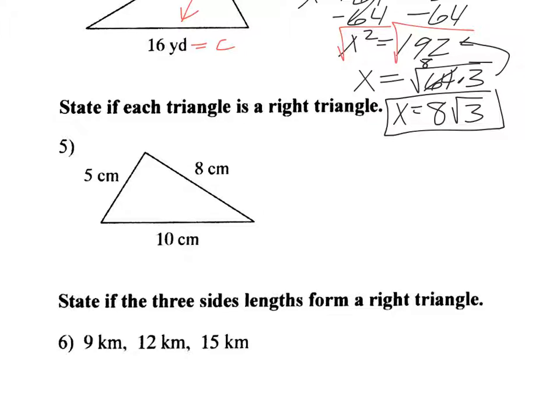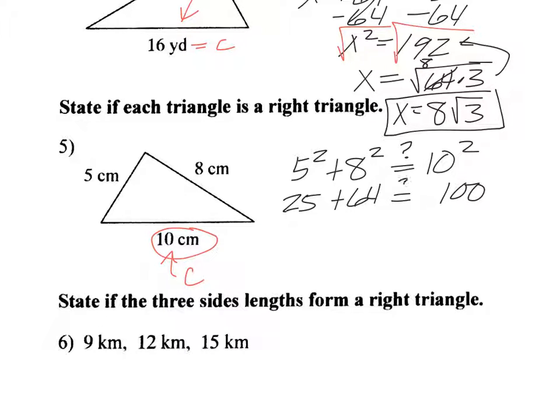Okay, this one says state if each triangle is a right triangle. So here, 10 would have to be the C if it works. Now, what we have to do is check. So the way we do that, we do Pythagorean Theorem, and we see if they are equal or not. So 5 squared is 25, 64, 100, and 25 plus 64 is 89, and 89 does not equal 100.